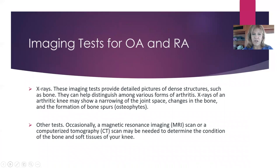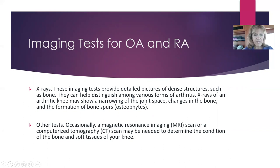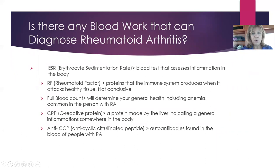So what do we do to find out if we have rheumatoid arthritis or OA? An x-ray helps for OA — x-rays look at bone and dense structures and help distinguish among various forms of arthritis. An x-ray may show narrowing of the joint space, changes in bone, and formation of bone spurs or osteophytes. Sometimes MRI or CT is used to look more deeply at soft tissue and cartilage.